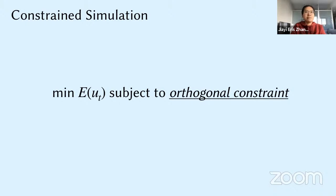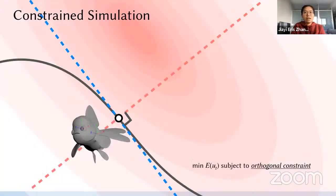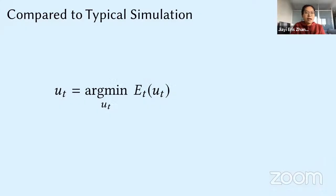So instead of solving an unconstrained problem, we're now solving a constrained simulation problem. Restricting the complementary displacement to the orthogonal space, while finding the best possible displacement that minimizes this combined total physical energy.